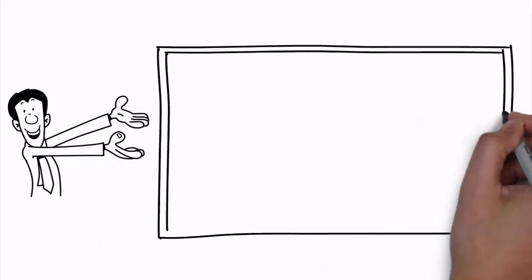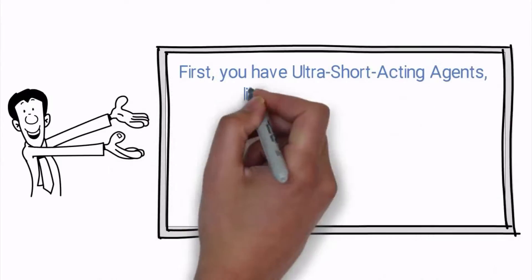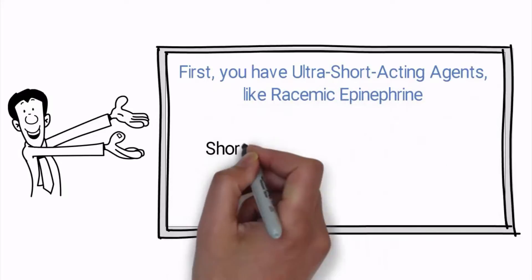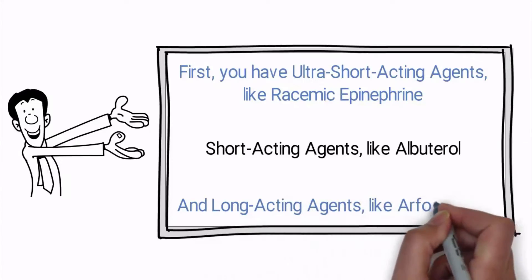There are three types of adrenergic bronchodilators. First, you have ultra-short-acting agents like racemic epinephrine, short-acting agents like albuterol, and long-acting agents like formoterol.